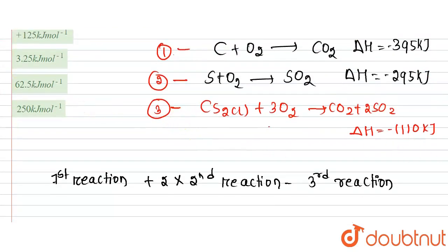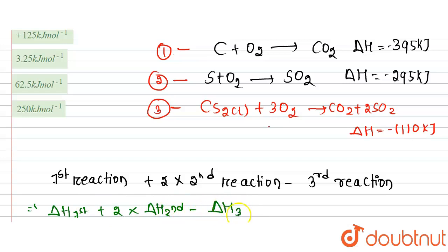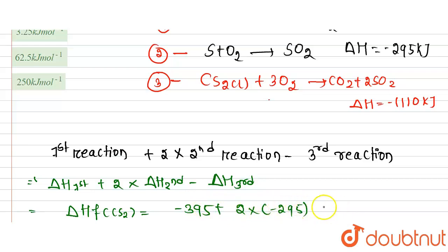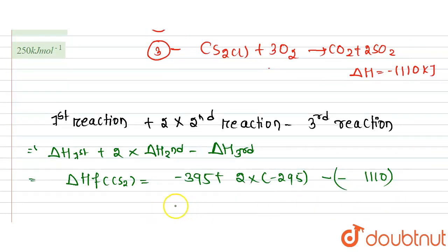Now substituting the values: ΔH of formation = ΔH₁ + 2×ΔH₂ − ΔH₃ = (−395) + 2×(−295) − (−1110) kJ.